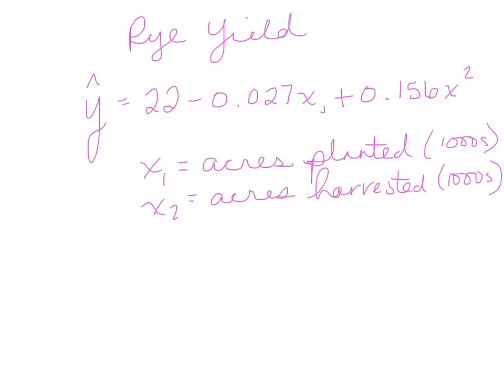Sometimes you can compare two different aspects and how they relate to a third quantitative aspect. This is called multiple regression. You're not going to have to come up with a multiple regression equation in intro to statistics, but I do want you to practice, if you have one, how you can use it to predict outcome levels.